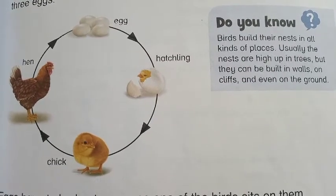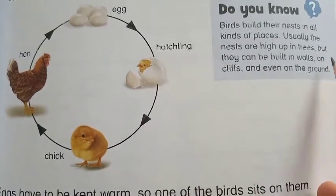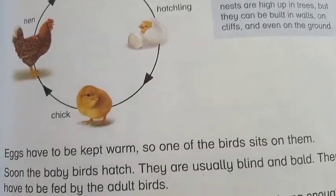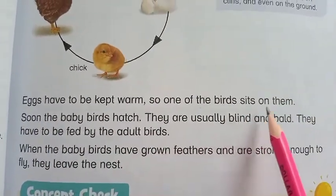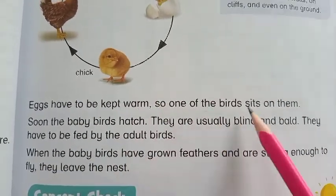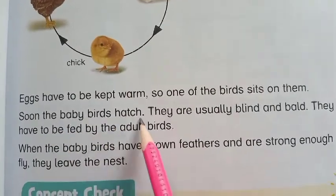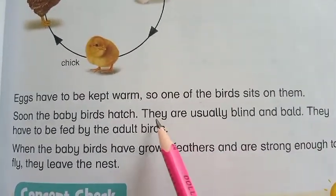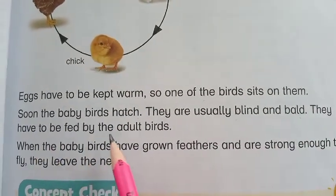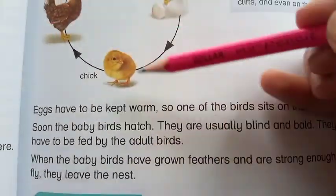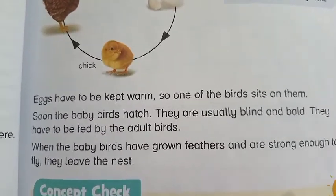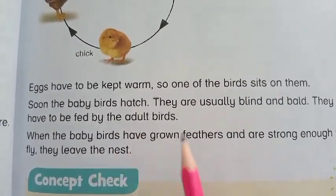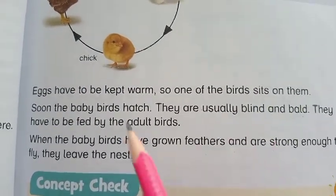Eggs have to be kept warm, so one of the birds sits on them. Soon, the baby birds hatch. They are usually blind and bald when they come out. They have to be fed by the adult birds. When the baby birds have grown feathers and are strong enough to fly, they leave the nest.